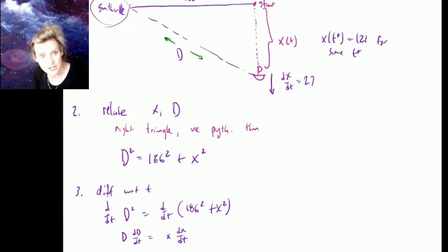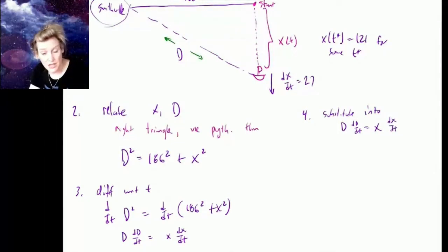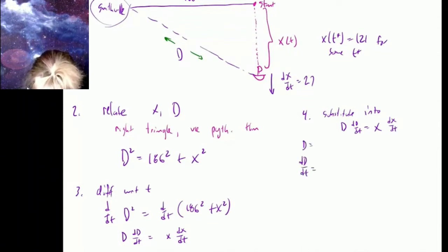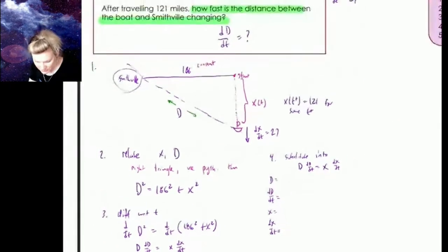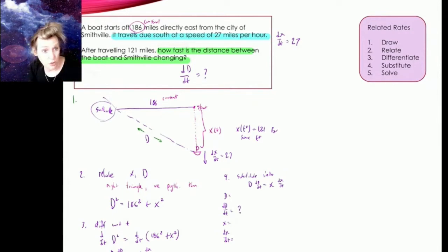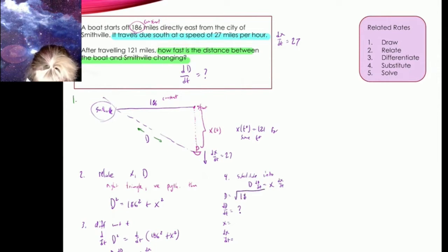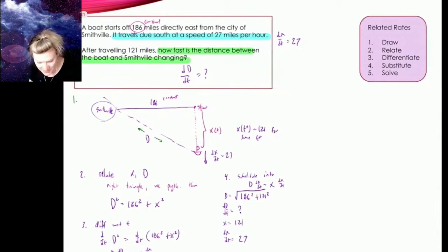Step four: substitute. I'm going to substitute into d · (dd/dt) = x · (dx/dt). That means I need values for d, dd/dt, x, and dx/dt. Referring back to the original problem: dd/dt is my unknown — I'll put a question mark there. The Pythagorean theorem tells me d equals the square root of 186² plus 121². x is 121, and dx/dt is 27.